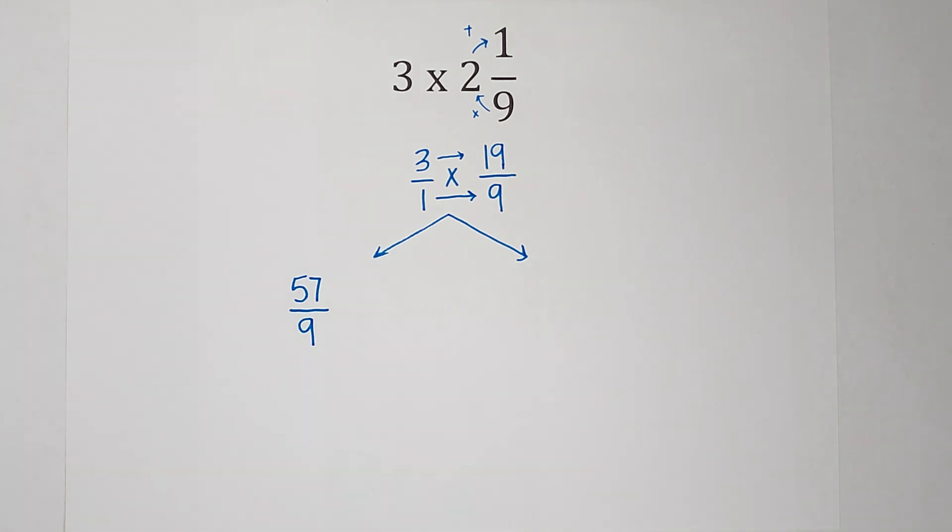But we always want to simplify it down. So when I look at that, I think, is there a number that can go into both 57 and 9? And 3 goes into both of them.